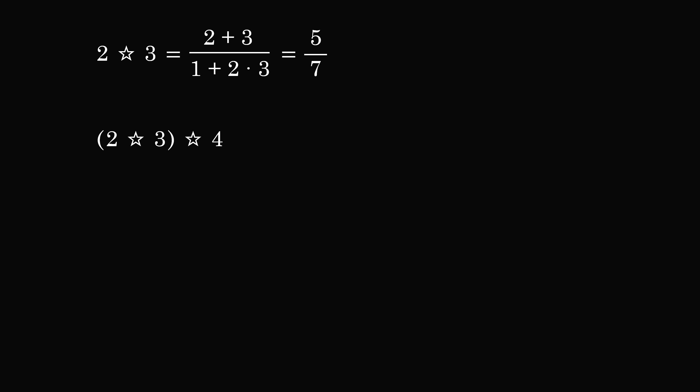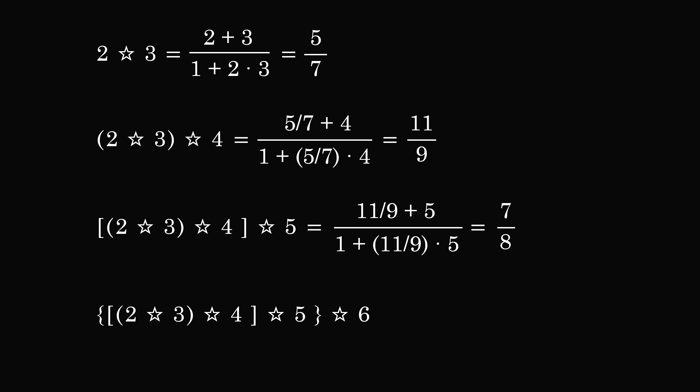For the next operation we take 5 over 7 star 4. We substitute in and then we simplify to get the result 11 over 9. We then want 11 over 9 star 5. We substitute in and get the result of 7 over 8. We then want 7 over 8 star 6. This is equal to 11 over 10.